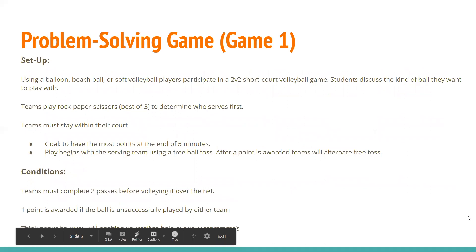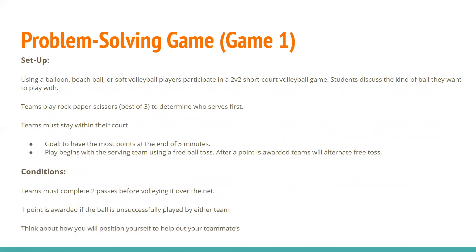Problem-solving Game number one setup: using a balloon, baseball, or soft volleyball, players participate in 2v2 short-court volleyball games. Students discuss the kind of ball they want to play with, bringing in a democratic process based on everyone's ability level so the group has success playing the game. Teams play rock-paper-scissors — best of three — to determine who serves first, which mitigates disputes about serving order.